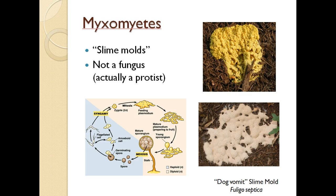If you've gone outside in the summertime and it looked like a dog vomited on your mulch, you're seeing a slime mold. These are the myxomycetes. They're not actually a fungus — they're protists — and they are usually seen on dead and decaying material. They have a very complicated life cycle.